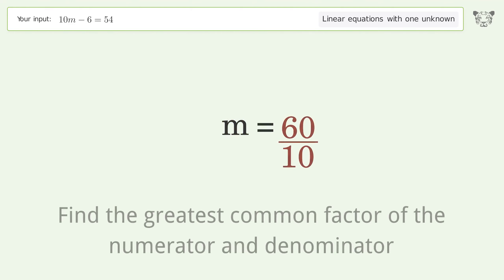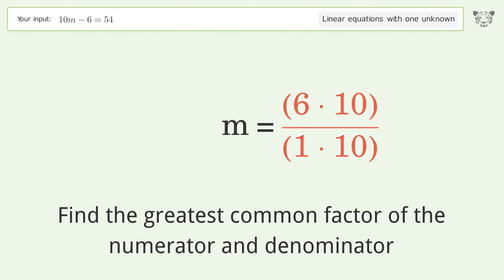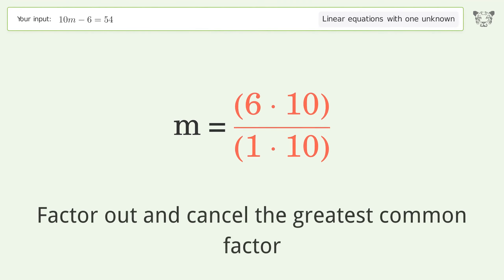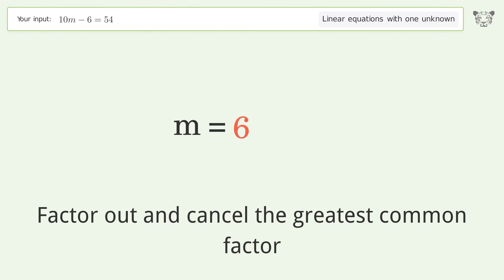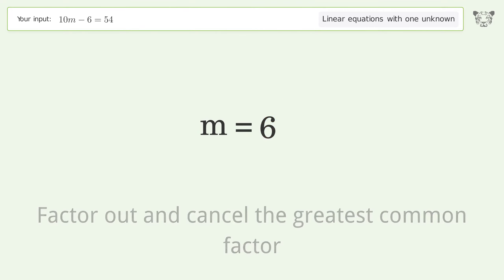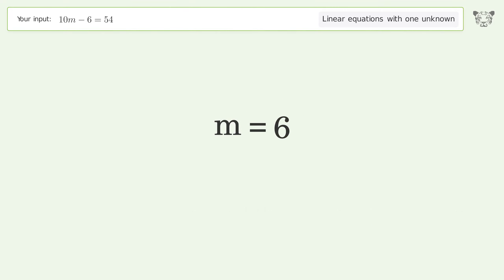Find the greatest common factor of the numerator and denominator, then factor out and cancel the greatest common factor. And so the final result is m equals 6.